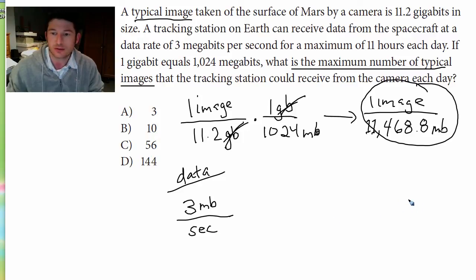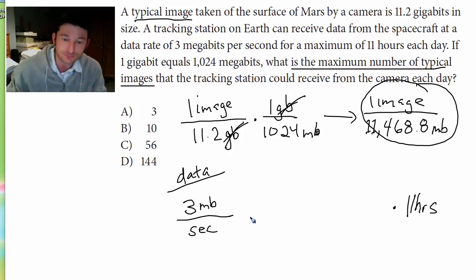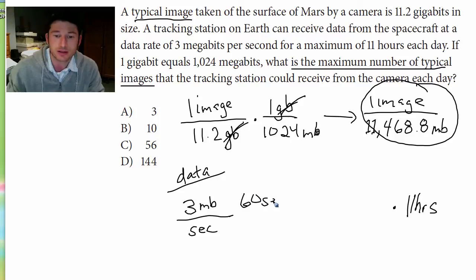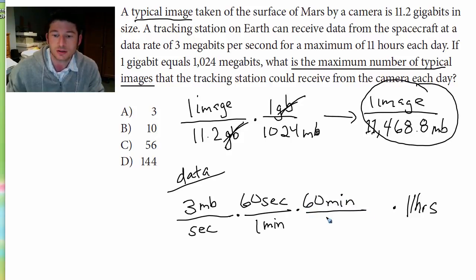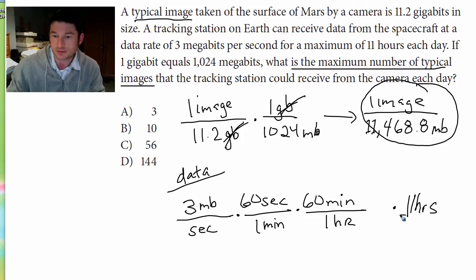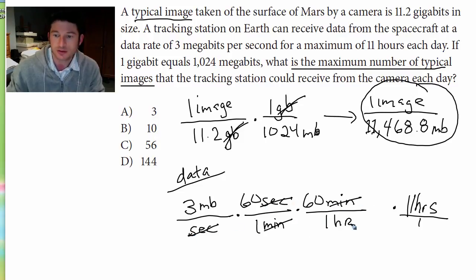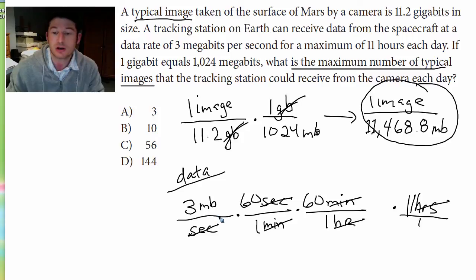So we have to go from seconds all the way to 11 hours. How many seconds are in a minute? 60 seconds in one minute. How many minutes in an hour? 60 minutes in one hour. That brings us to our units — seconds cross out, minutes cross out, hours cross out — and the only thing we're left with is megabits. So now we know how many megabits we're getting in 11 hours.